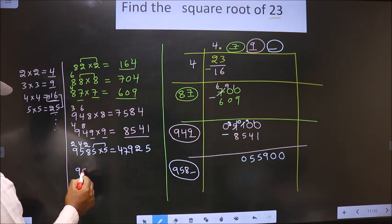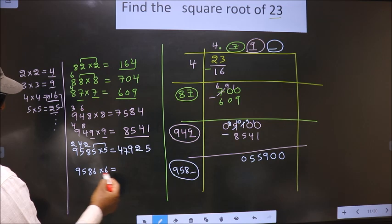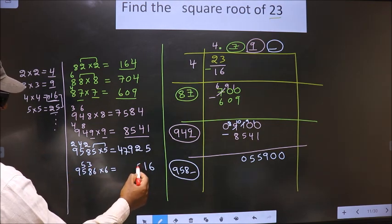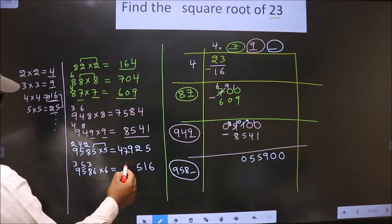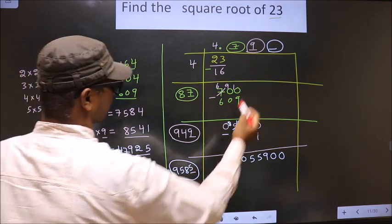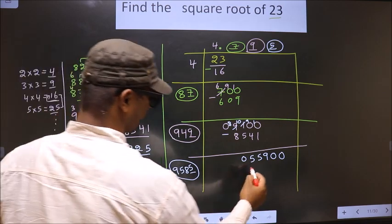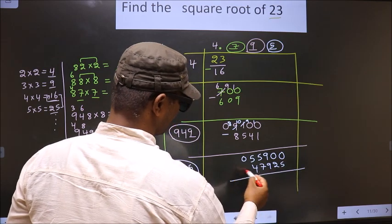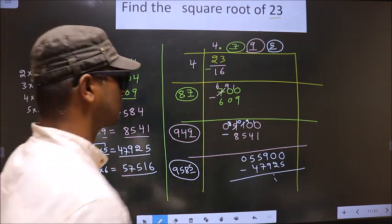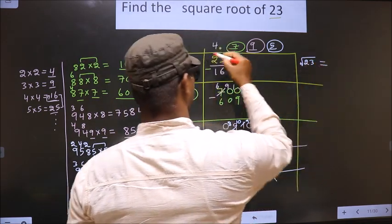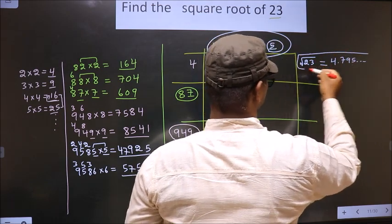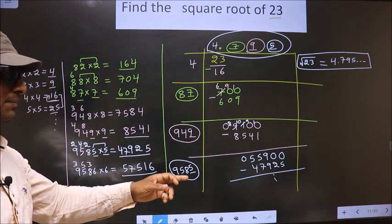What if we check with 6: 9586 into 6. 6 times 6 is 36, carry 3. 6 times 8 is 48 plus 3 is 51, carry 5. 6 times 5 is 30 plus 5 is 35, carry 3. 6 times 9 is 54 plus 3 is 57. So this is exceeding it, so we take 5. Write 5 here, 5 here, and below 47925. Subtract and it goes on. It is enough if we find up to 3 decimal places. So the square root of 23 is 4.795 and it goes on. So this is our answer. Am I clear?